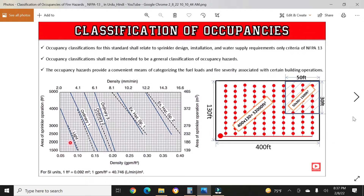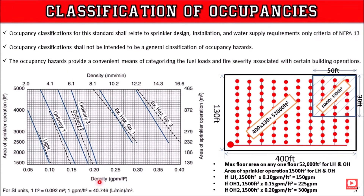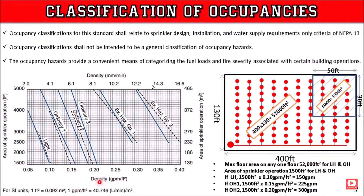We are going to look at the density of water flow. The density is set up on the page, and the area of sprinkler operation is multiplied by the density of water flow. The area of sprinkler operation is then used to calculate the required water flow as per NFPA 13.